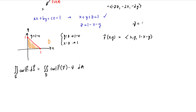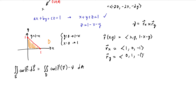The normal vector field ν equals the cross product of the partial derivatives of our parametrization. R sub X is the vector (1, 0, −1) and R sub Y is the vector (0, 1, −1). When we cross these together, we get that ν equals (1, 1, 1). For a plane, a constant normal vector field makes perfect sense.